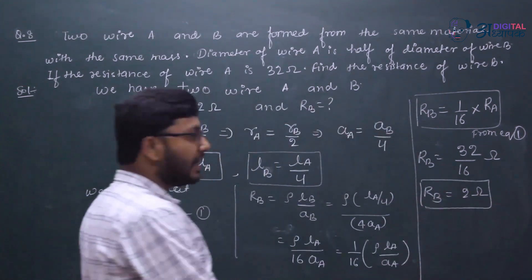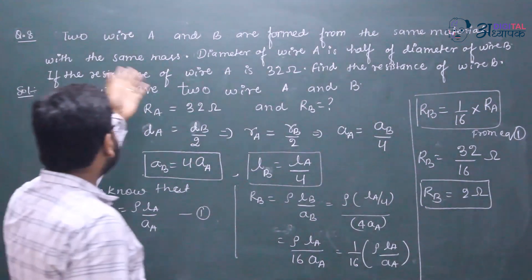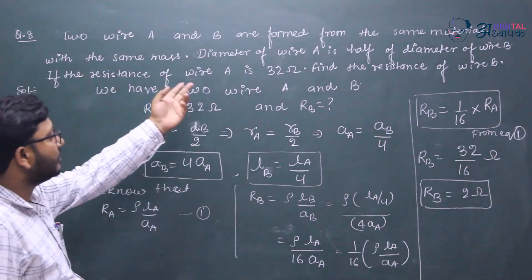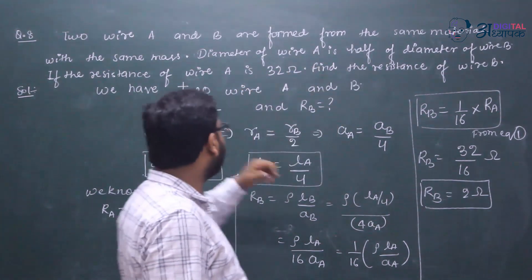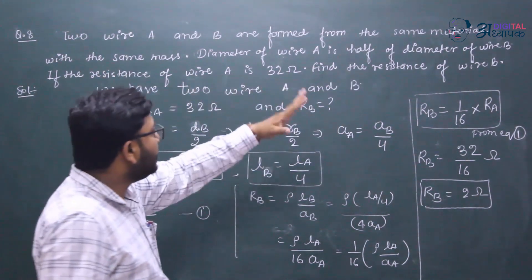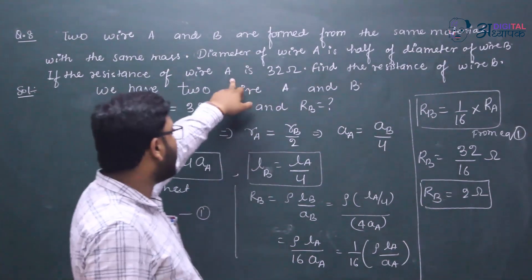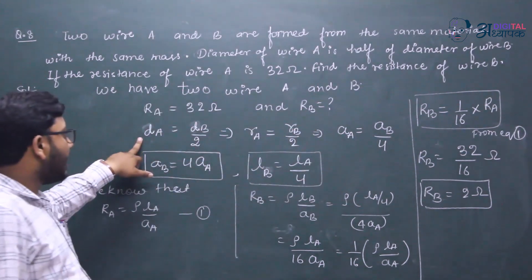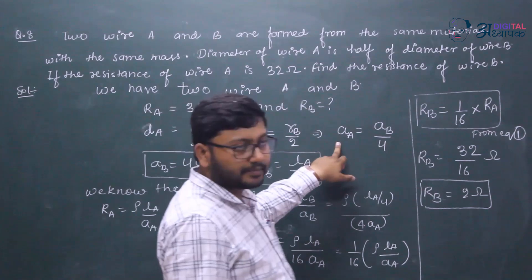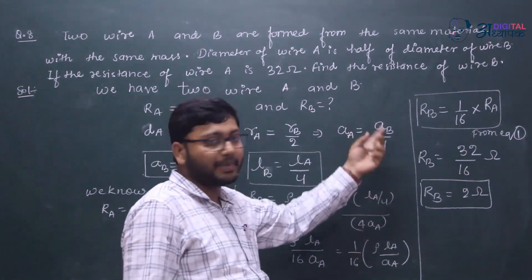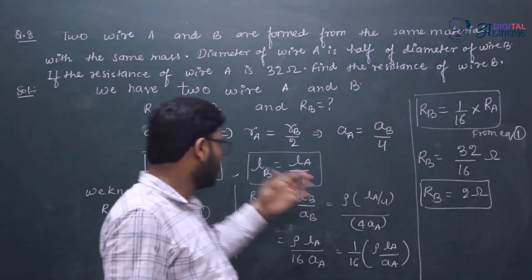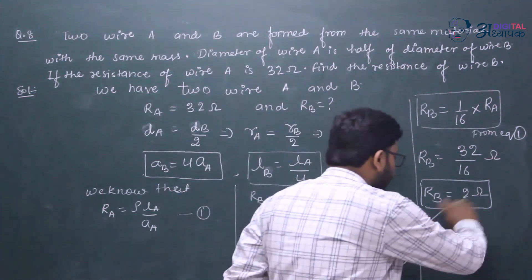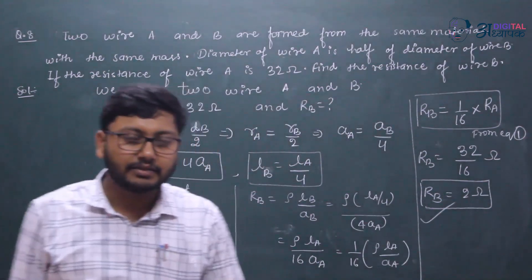Your answer is 2 ohm. RB is equal to 32 divided by 16, which is 2 ohm. This is your exact answer. Thank you.